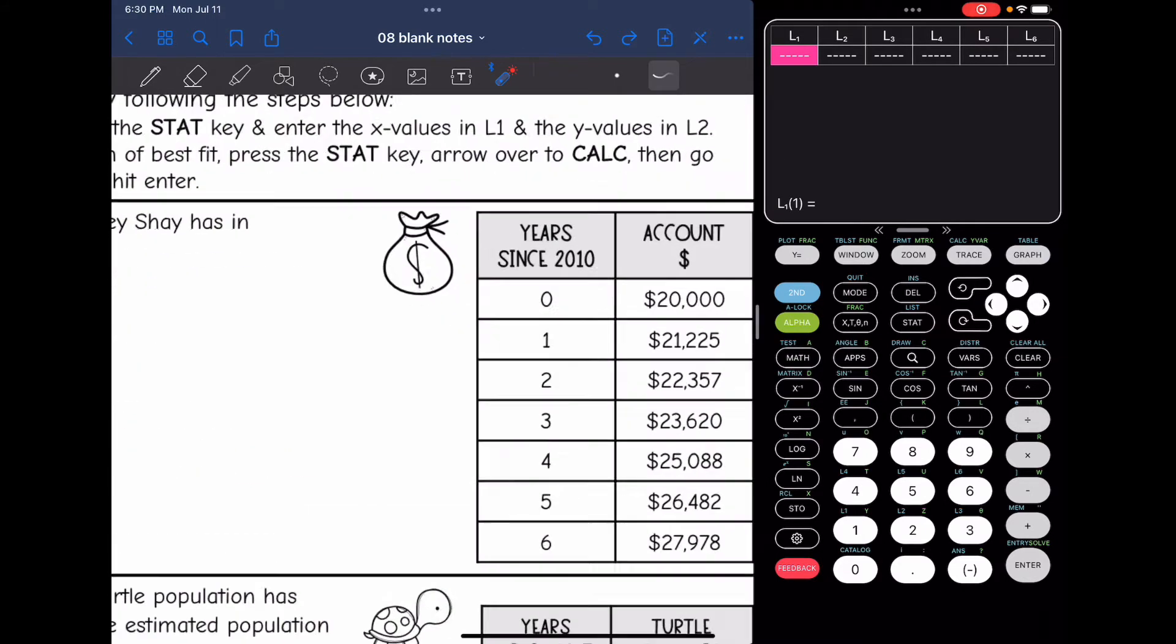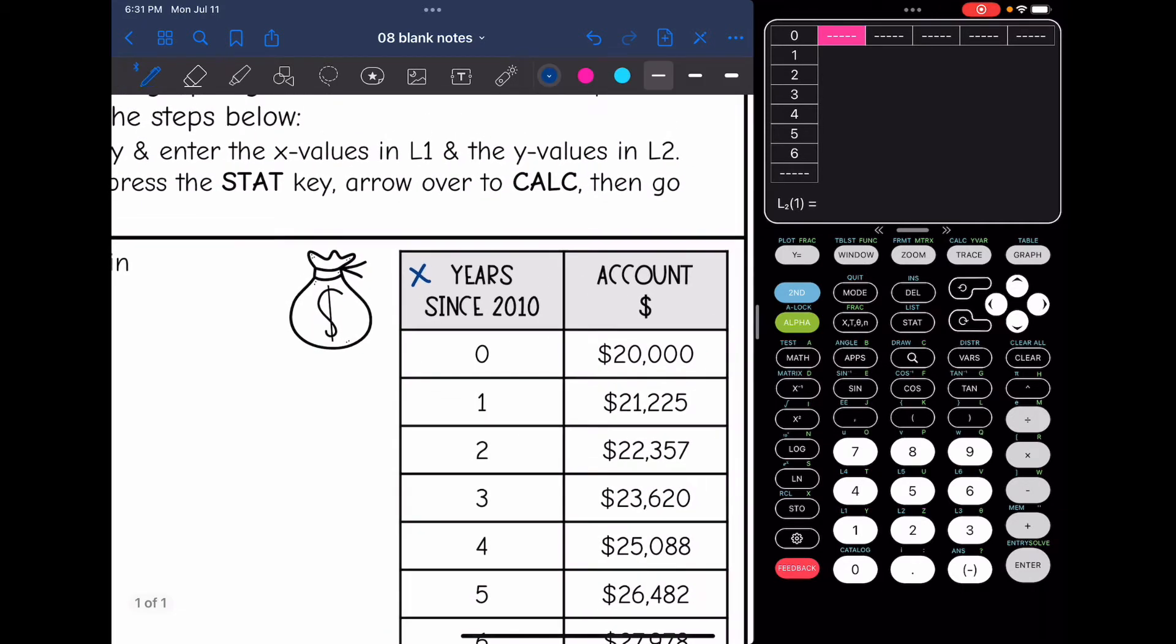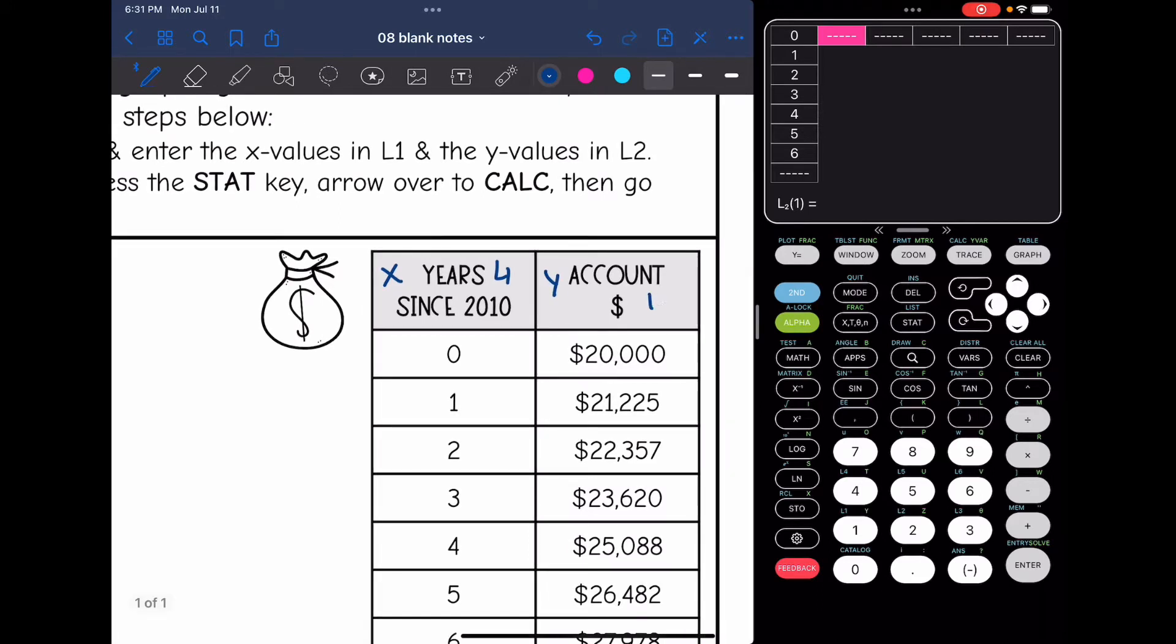And then in L1, I will put all of the years since 2010, which is zero, one, two, three, four, five, and six.